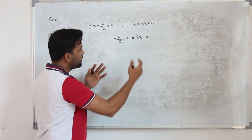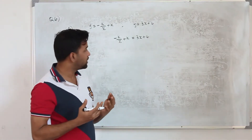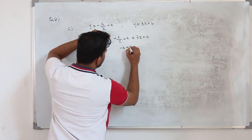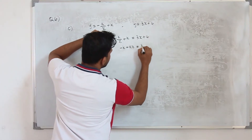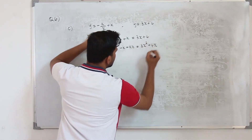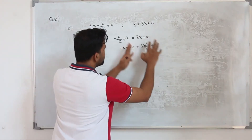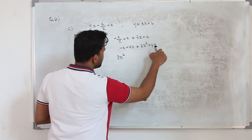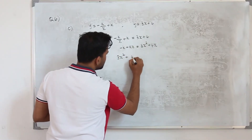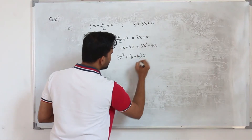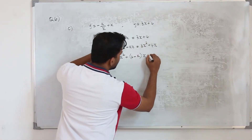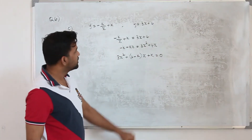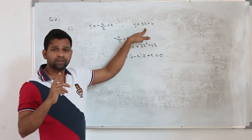Rearrange to form a quadratic equation. Multiplying everything by x: minus k plus kx equals 3x² plus 4x. Bringing everything to one side: 3x² plus (4 minus k)x plus k equals 0. We now have the quadratic equation in x.